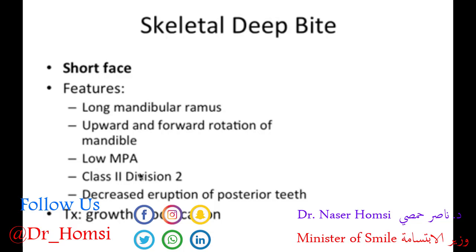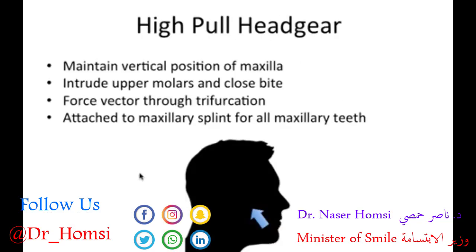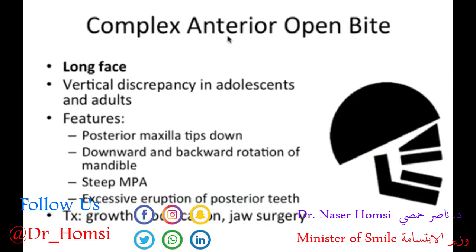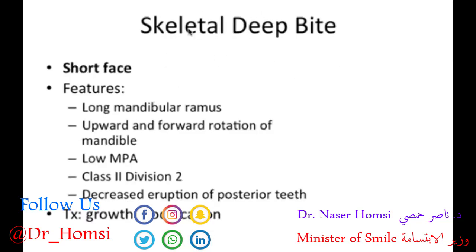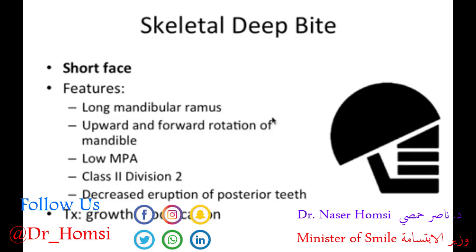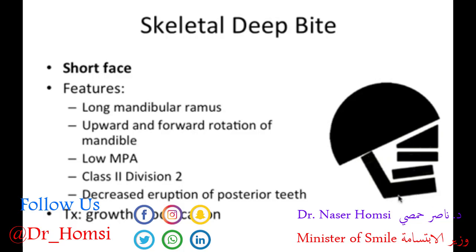Skeletal deep bite is pretty much the exact opposite of complex anterior open bite. Instead of long face, it's short face, and the features are completely opposite. We have a long mandibular ramus, upward and forward rotation of the mandible, a low mandibular plane angle, usually a class 2 malocclusion with division 2 — which involves dumping of the incisors — and decreased eruption of posterior teeth. So we get a shorter face in the front and a longer craniofacial complex posteriorly.